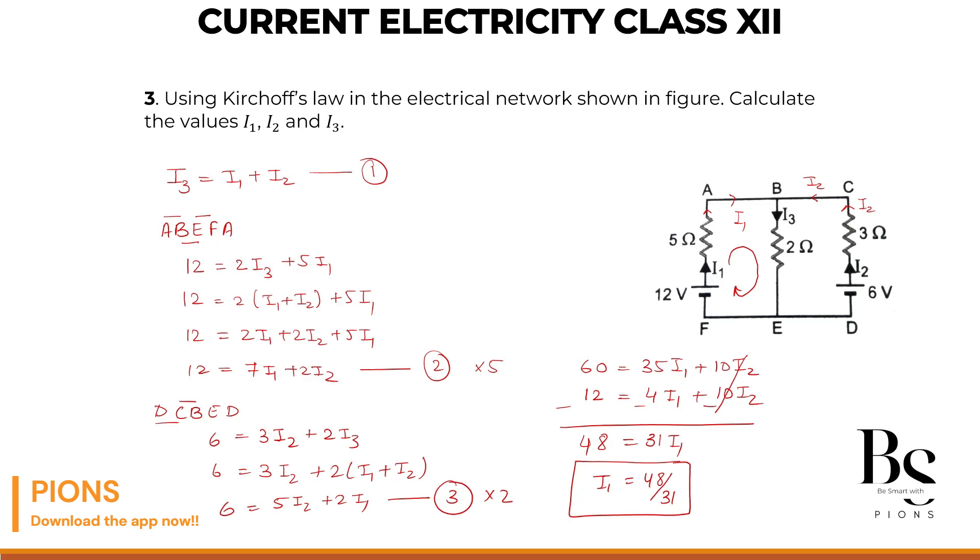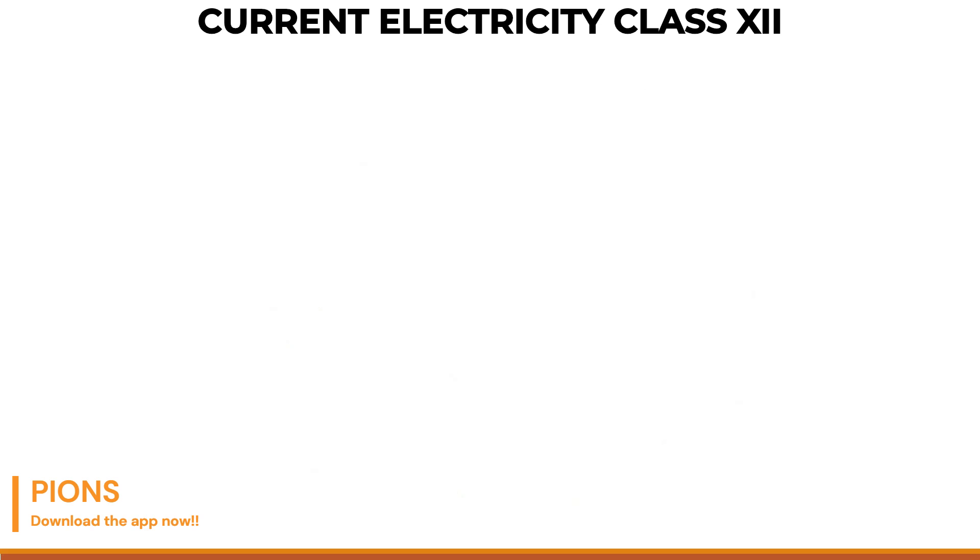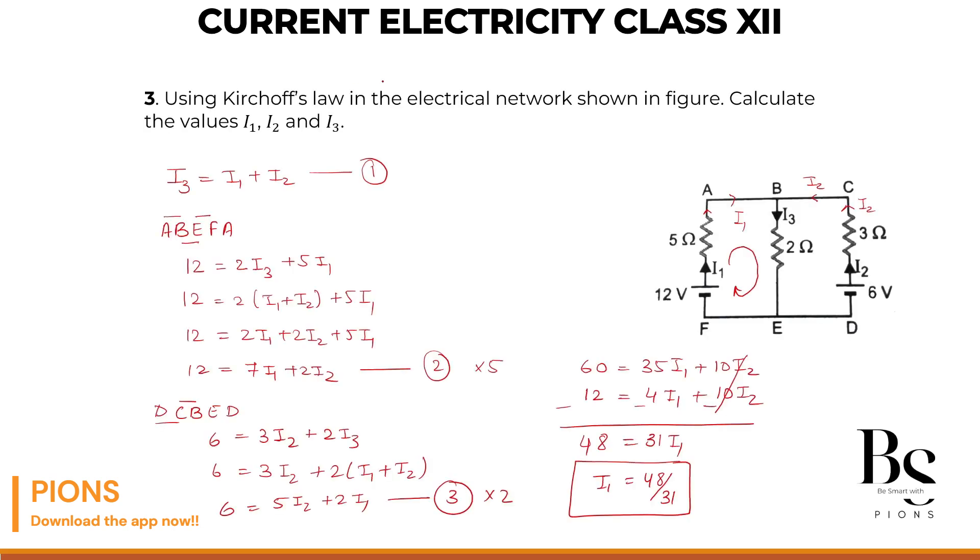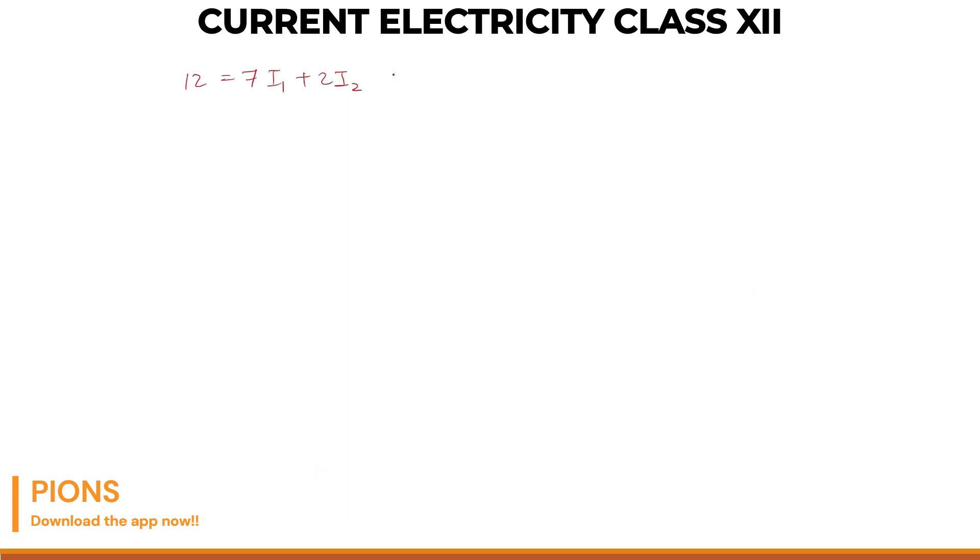Let's substitute it in equation number 2. 12 equals 7I1 plus 2I2, and I1 is 48 by 31. So this will be 12 minus 7 times 48. 7 times 8 is 56, 7 times 4 is 28, 28 and 5 is 33. So 336 by 31 equals 2I2.